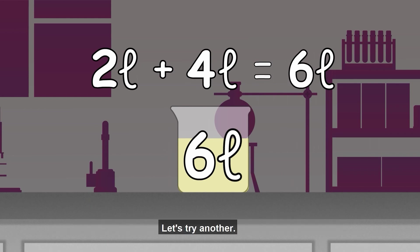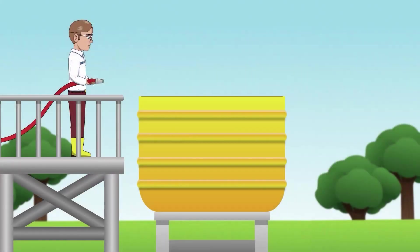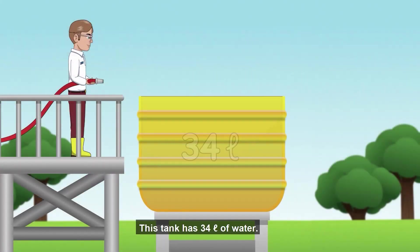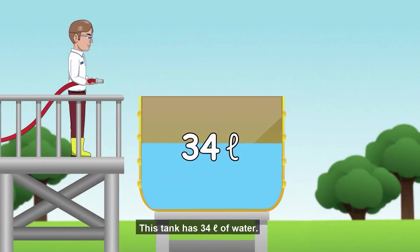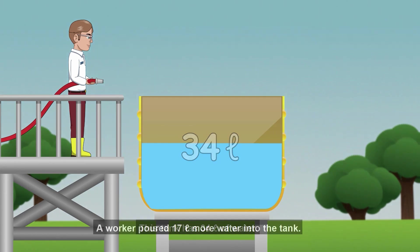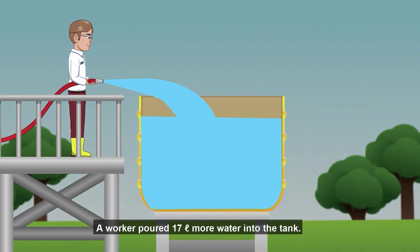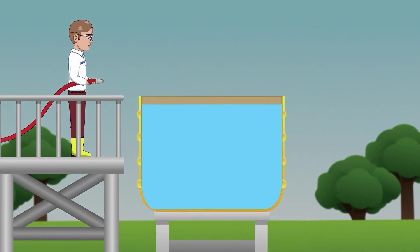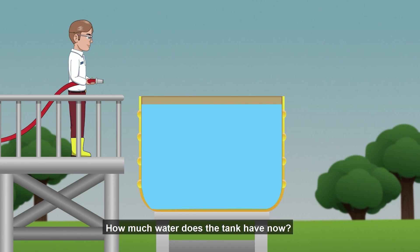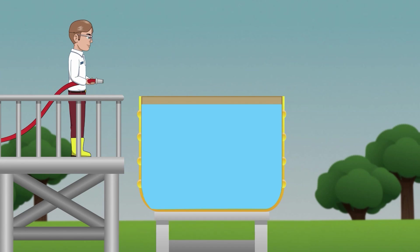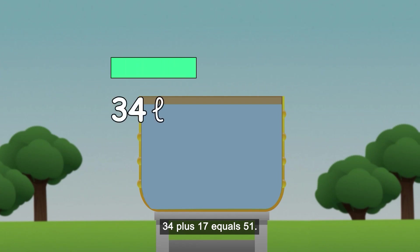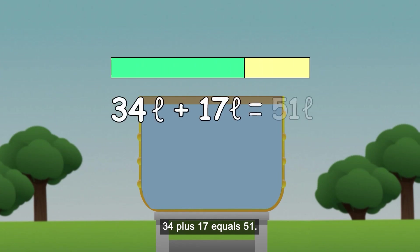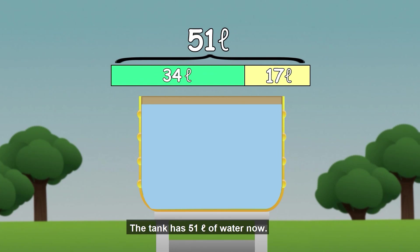Let's try another. This tank has 34 liters of water. A worker pours 17 liters more water into the tank. How much water does the tank have now? 34 plus 17 equals 51. The tank has 51 liters of water now.